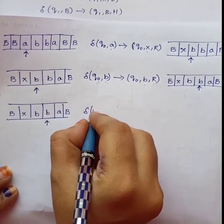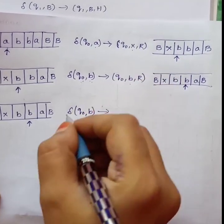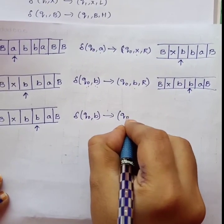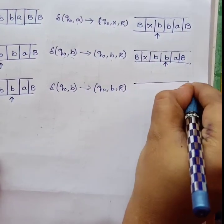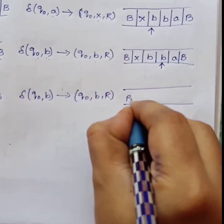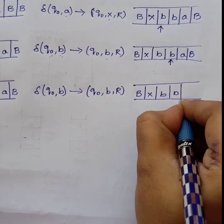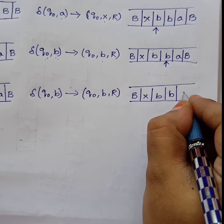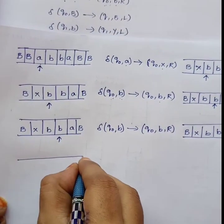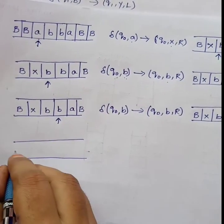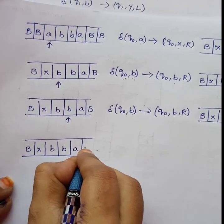Now again: delta of Q0 comma B tends to same transition Q0 comma B comma R. So this can be written as B, X, B, B — the read/write head moves one step right, now indicating the next input. The input now is A. Delta of Q0 comma A — this is the same first transition we already applied.